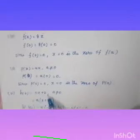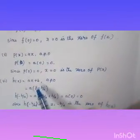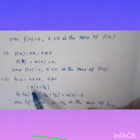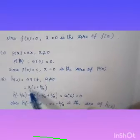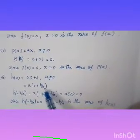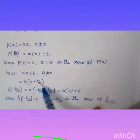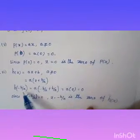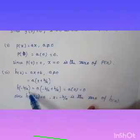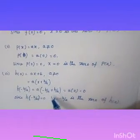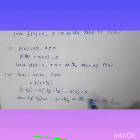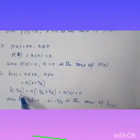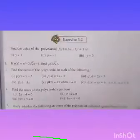Last problem: h of x equals ax plus b, same form as the second problem. Take a outside: a times (x plus b by a). Setting x plus b by a to zero gives x equals minus b by a. Checking: a into minus b by a plus b by a equals a into 0 equals 0. So minus b by a is the zero of h of x.